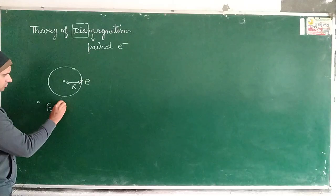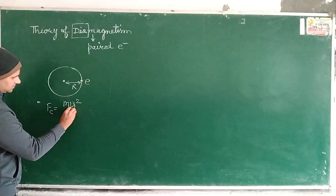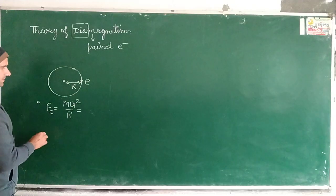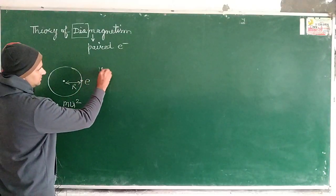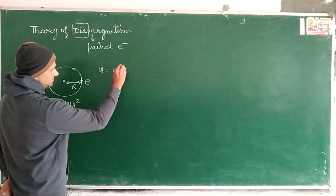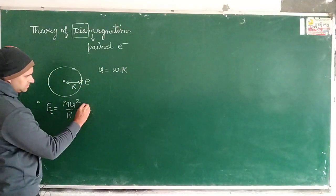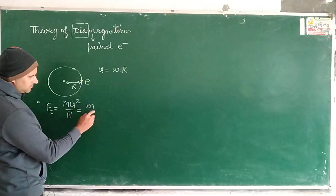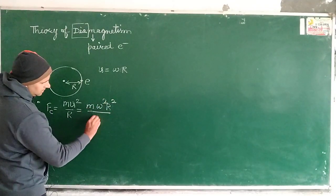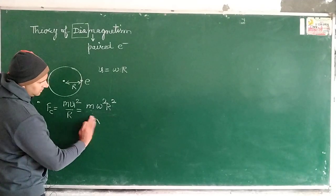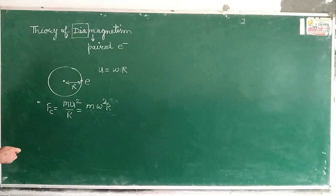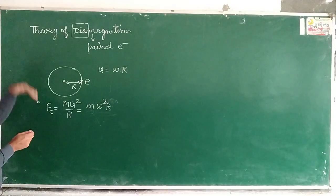The centripetal force F_c is equal to mv²/r. If we write it in terms of angular velocity, then since velocity v equals angular velocity ω times r, substituting gives m·ω²·r² divided by r, so r cancels out and the centripetal force becomes F_c = mω²r.